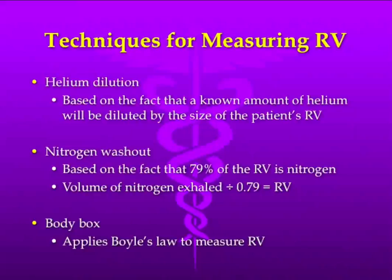Nitrogen washout, on the other hand, is based on the fact that 79% of what's in the RV is nitrogen. You wash that out, take a look at your exhaled nitrogen, and divide it by 0.79 — that'll tell you what the RV is. And the last one is body plethysmography, also referred to as the body box.